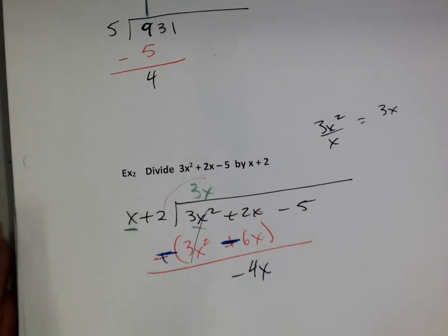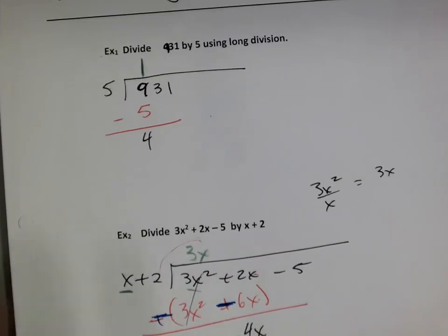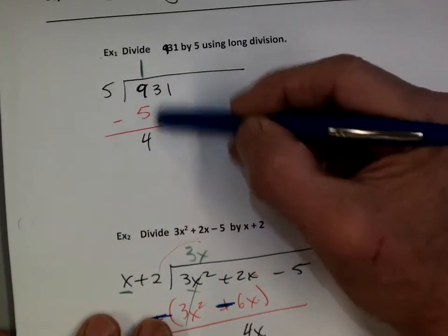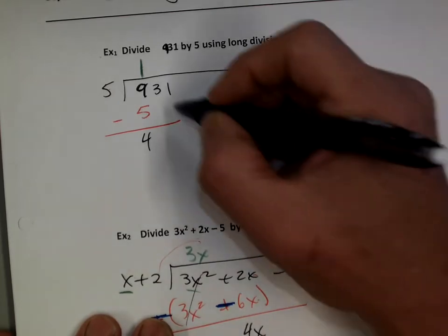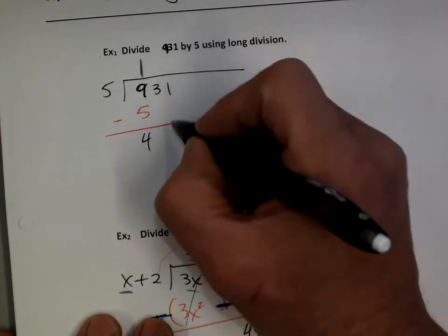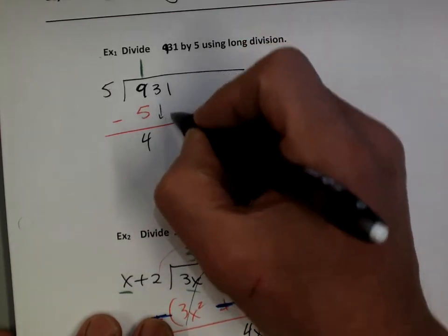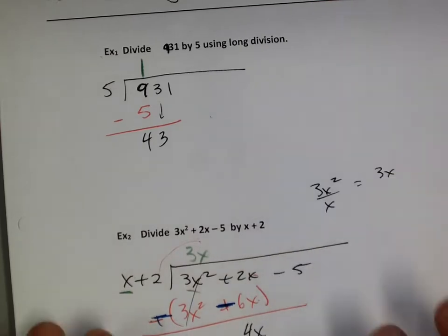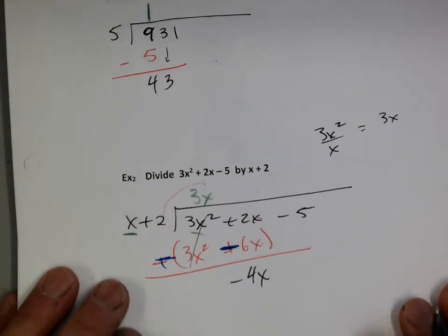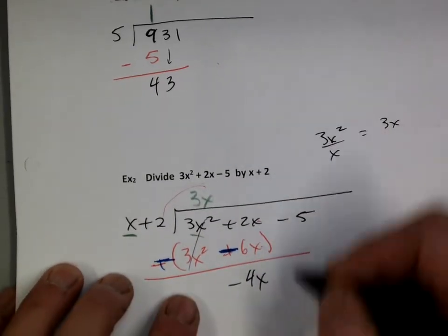So then up on the top one, what do we do next? We bring 3 down — bring 3 straight down. And here, same thing, we're going to bring down the negative 5.